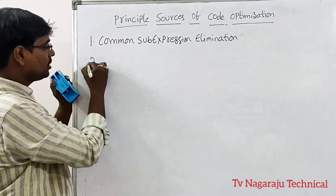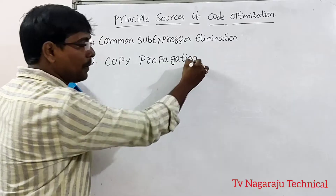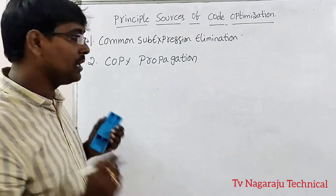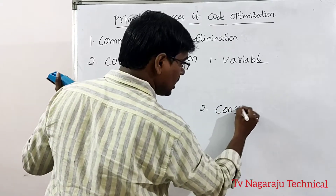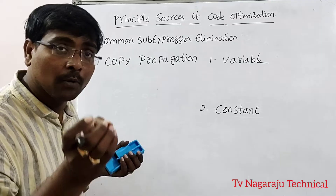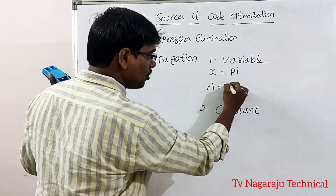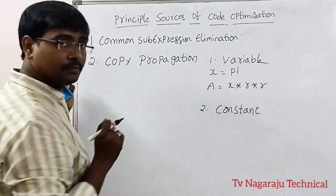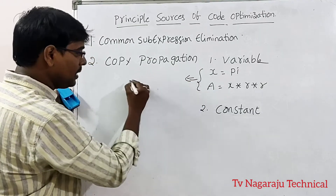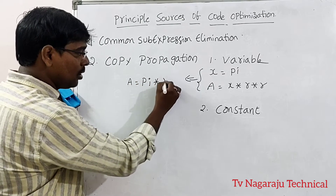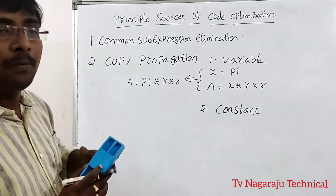The second source for code optimization is copy propagation. Copy propagation occurs in two variations: variable propagation and constant propagation. For example, if you have x = pi and then a = x * r * r, you can optimize the code to simply a = pi * r * r. Here, the variable x is unnecessarily used.